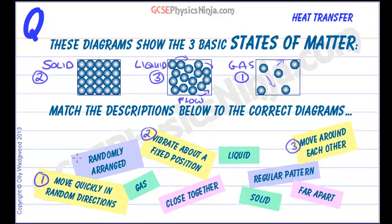Randomly arranged particles. We'll call that four. Which ones are random? Well, not a solid. Those are pretty regular, aren't they? So liquids are random and gases are randomly arranged.